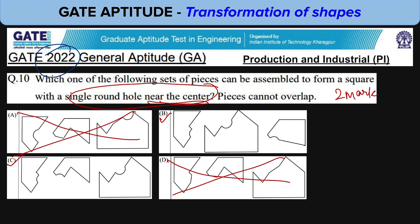See that this piece and this piece can be assembled but this piece and this piece cannot be assembled. But this piece and this piece can be assembled, same these can be assembled, so option C is the correct answer.